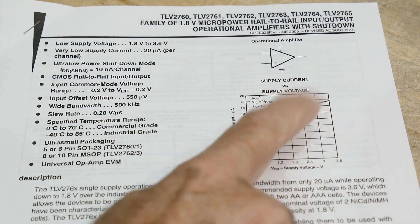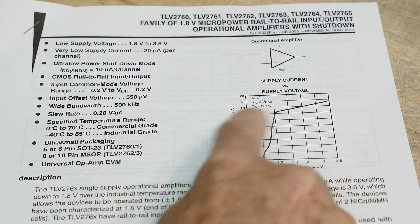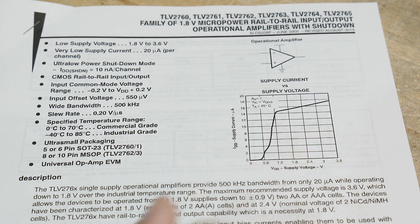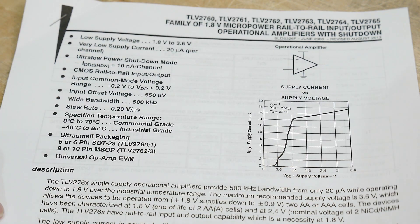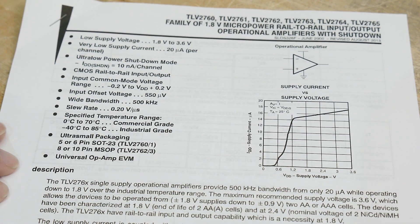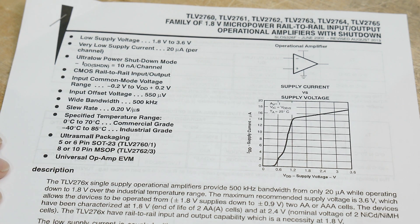So let's put a graph. They must be proud of this. So the supply voltage current is only about 16 micro amps. So it's great for battery powered applications. I mean, that's really what this thing is targeted for is a battery powered universal op amp EVM. I don't know what EVM is.